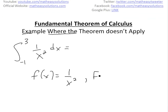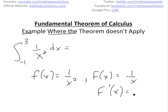The anti-derivative, capital F, is just going to equal negative one over x, because if you take the derivative of this using the power rule, the negatives cancel, so it would be plus one over x squared. You can see the video link on the power rule in the info below. So this would be the anti-derivative.